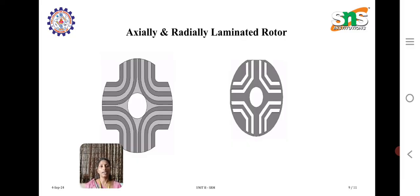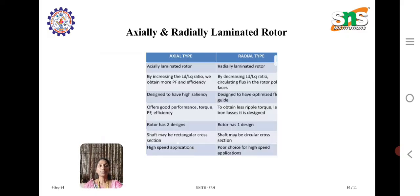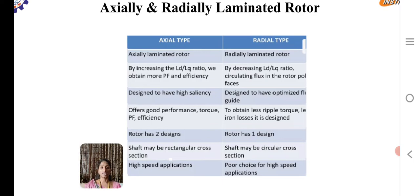This is the axially and radially laminated rotor flux distribution, where it will be a curve-shaped structure. The basic difference between axial and radial laminated is: axial type has two designs whereas radial type has only one design. The shaft may be rectangular cross-section in axial type, whereas in radial type it is circular cross-section. The axial type design is mainly chosen for high speed applications, whereas radial type is not appropriate for high speed applications.